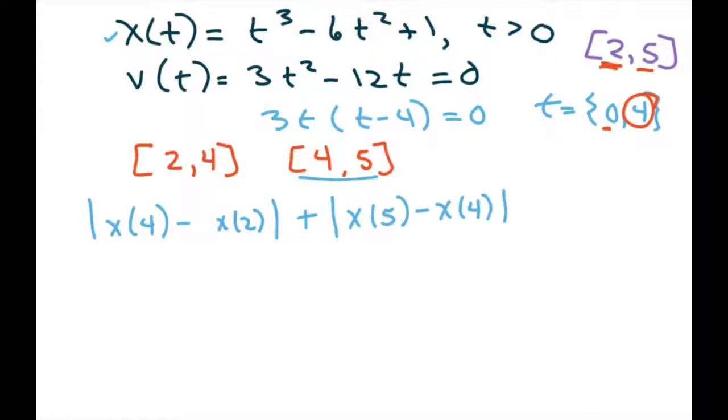You're just going to use your calculator if you can. So we have 4 cubed minus 6 times 16 plus 1. So this is going to be negative 31.